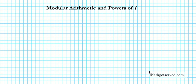Hey there students. In this clip we are going to be going over some examples on how to use modular arithmetic to compute powers of i. Before we get started on the actual examples, we are going to go over the formula that connects modular arithmetic with the process of computing powers of i. The formula we are going to be using today is: i to the n power is equal to i to the n mod 4.